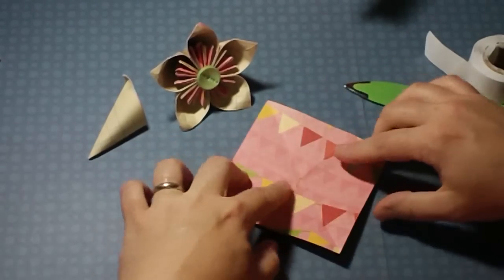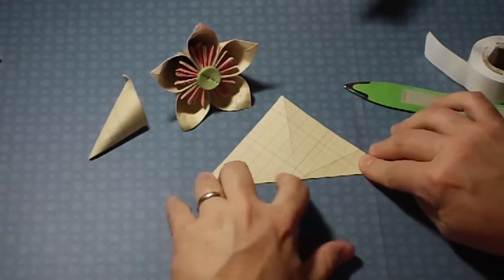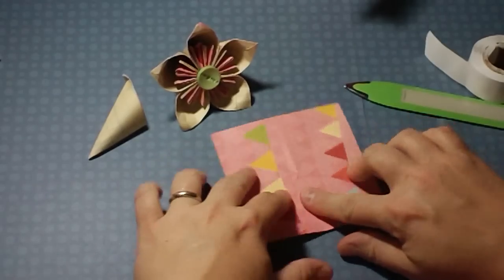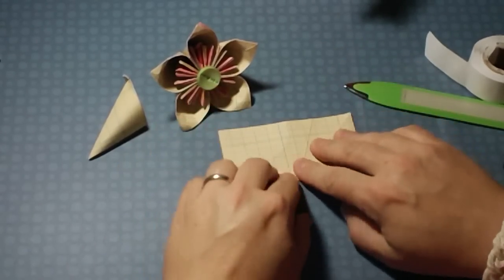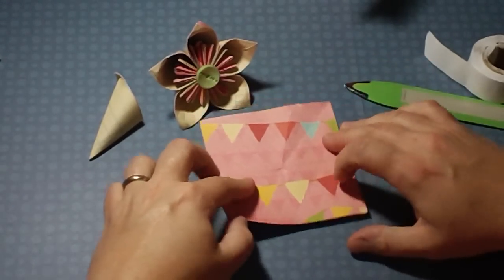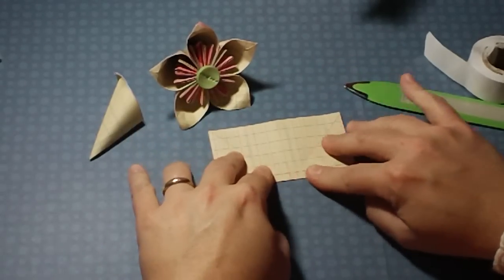Then we open it up, turn it, and do the same thing on the other side to make a triangle. Open it back up, then you're going to fold halfway this way. Open it up, turn it, and fold halfway just like this.